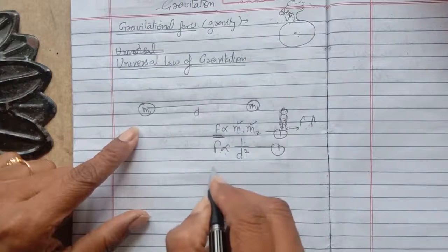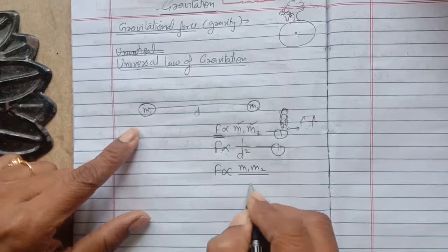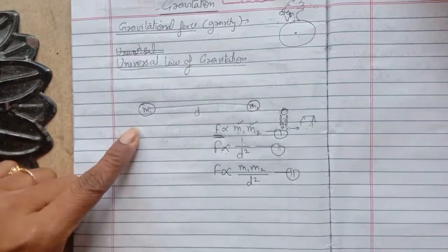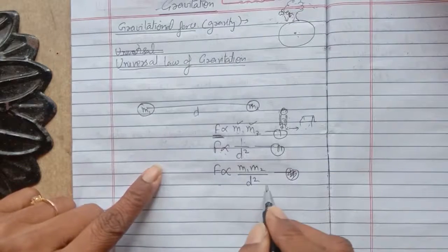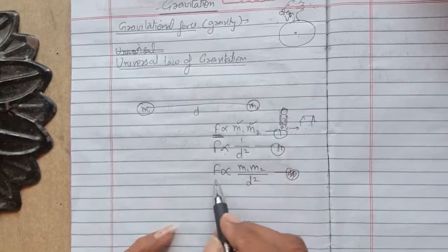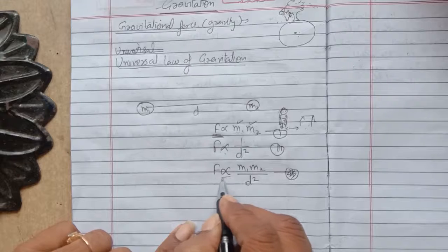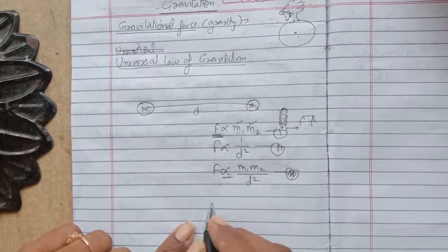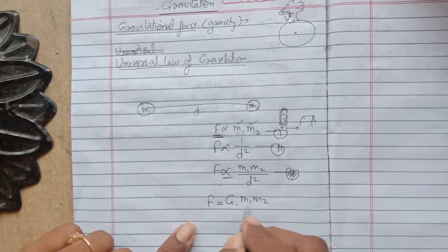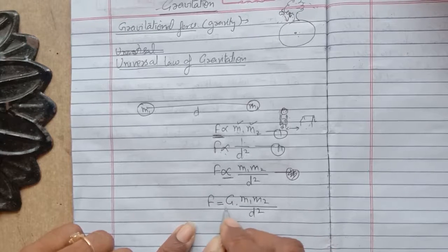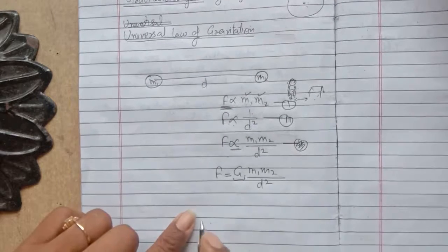Combining both equations: F is directly proportional to M1×M2/D². To remove the proportionality sign, we add a constant — capital G. So F = G×M1×M2/D². Capital G is called the universal gravitational constant. The value of G is constant throughout the whole universe — it does not vary by changing the mass or the distance.